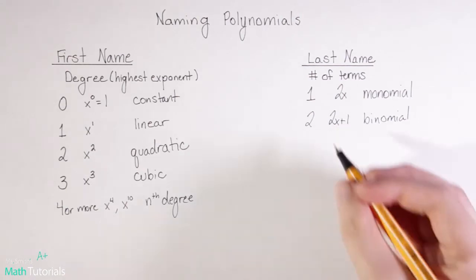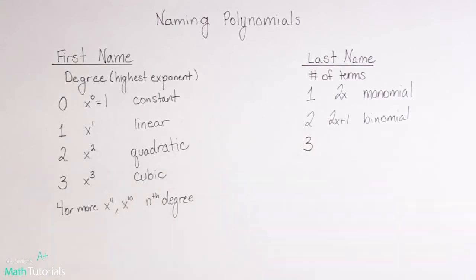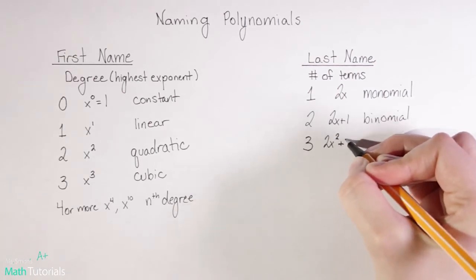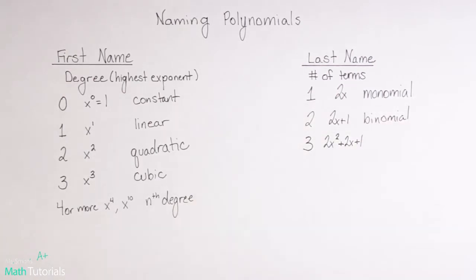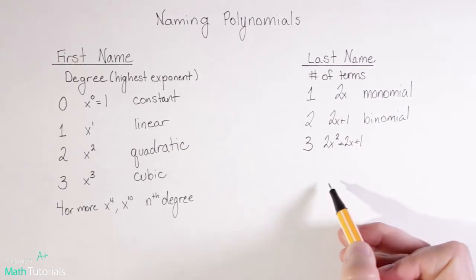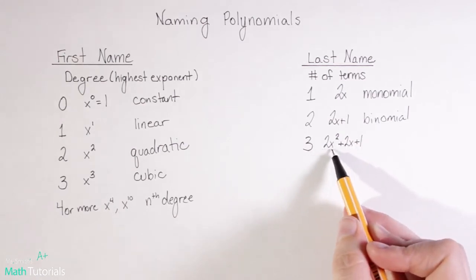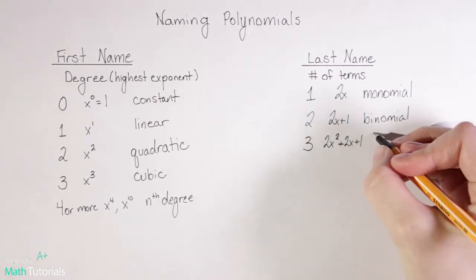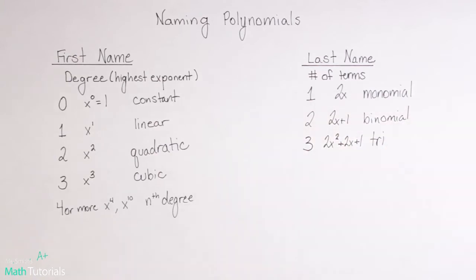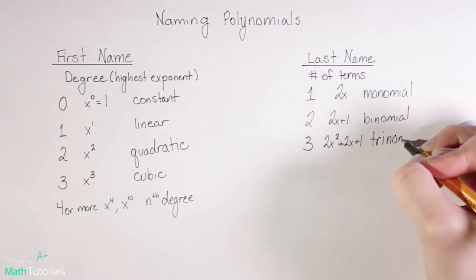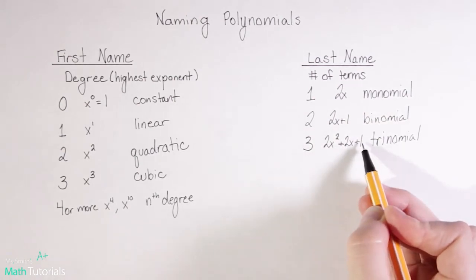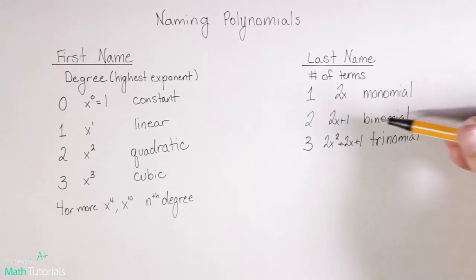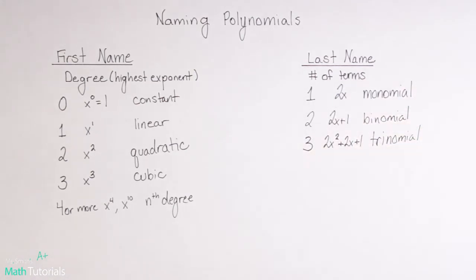Our next type would be a three-term expression, which could look like 2x squared plus 2x plus 1. We look at what is separated by plus or minus signs: one, two, three terms. In the same way a tricycle has three wheels, a trinomial has three terms. Those two are usually easy to remember if you think bicycle, tricycle — two terms, three terms.